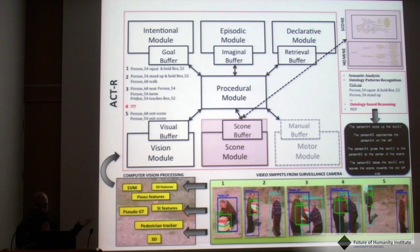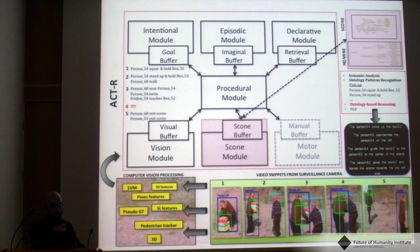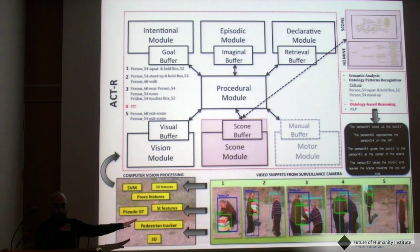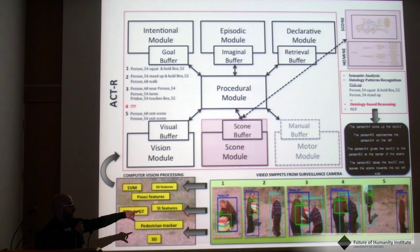This is a diagram representing the task we are performing with ACT-R. Here we have an environment: a couple of people who are probably exchanging something, although the box that person 54 is holding is occluded in snippet number 4.